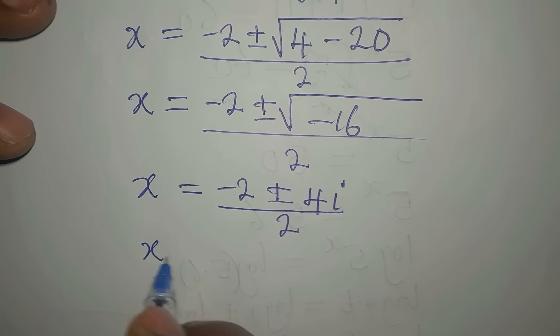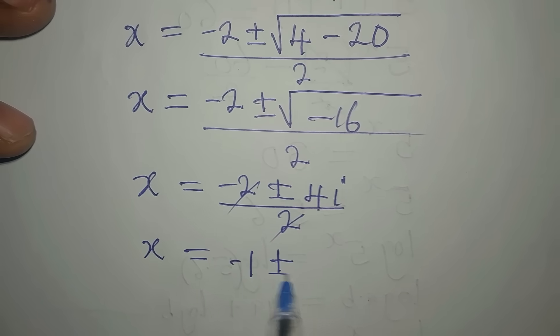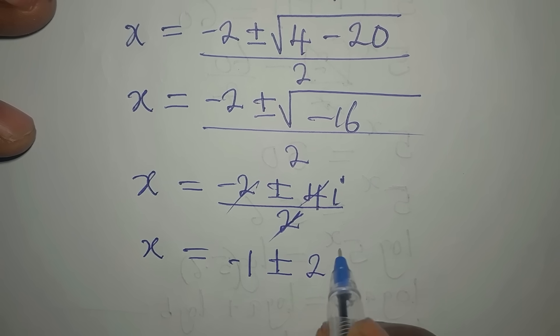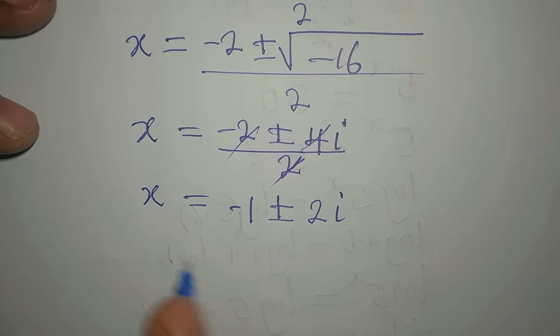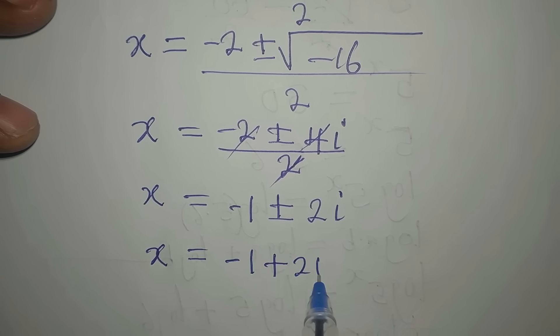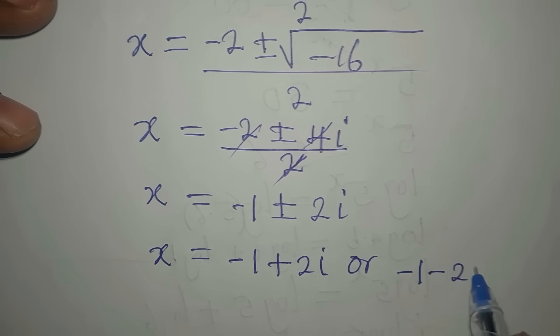Our x is now 2 can go there, we have minus 1, plus or minus, the same 2 will go there, we now have 2 then multiply by i. So our x is now minus 1 plus 2i, or minus 1 minus 2i.